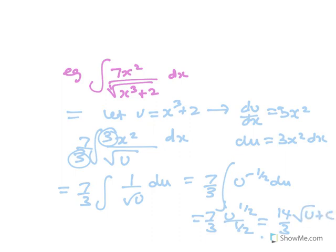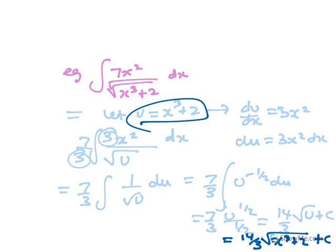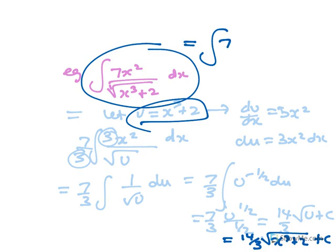Okay, so you've just got to actually replace the u with what it equals. So it's 14 on 3, the square root of, what's u equal to, x cubed plus 2, and then plus c. Now just looking at this, you could also just do this as a reverse chain rule. So this is 7x squared, x cubed plus 2 to the minus half. It is not a log because that is not a 1 there.